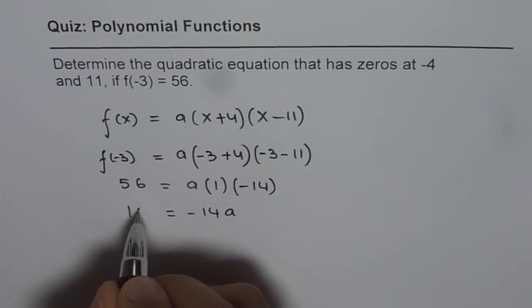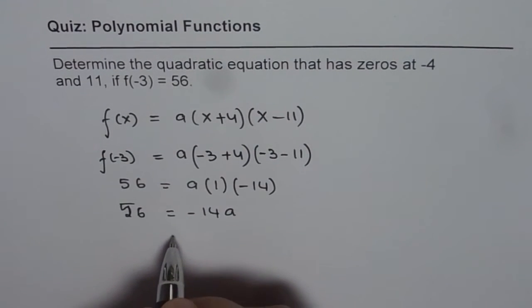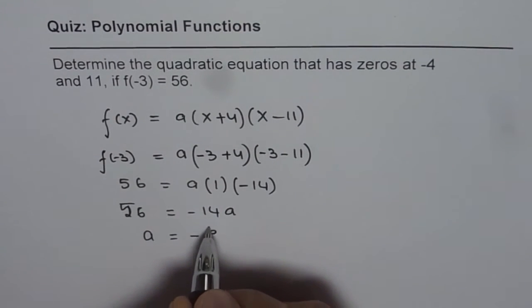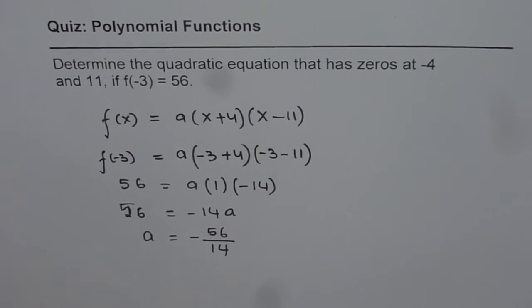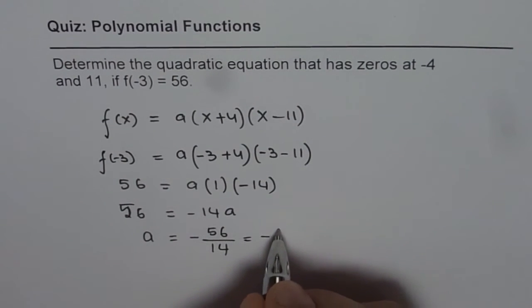So from here we get -14a equals 56. So we can say a equals to -56 over 14, which is -4.